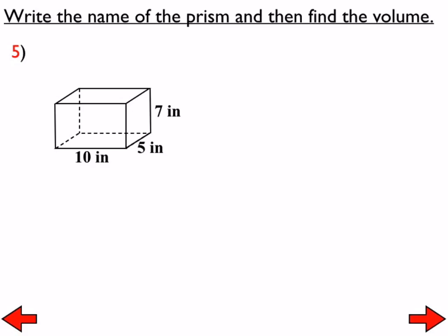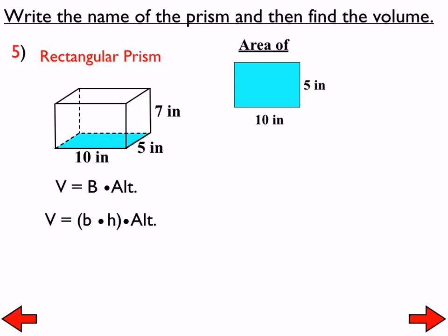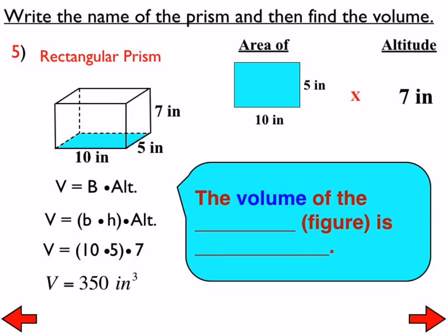Now I'm not giving you the area of the base—you'll have to figure it out. Write down the name and then find the volume. This is a rectangular prism, so we need to find the area of the rectangle. Most of us chose the bottom face as the base because it's typically the bottom. The area of the base is 50, and the altitude is 7, so 50 times 7 gives a volume of the rectangular prism of 350 cubic inches.